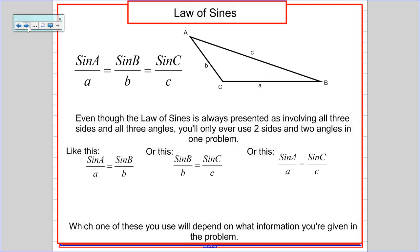So the law of sines is always presented in books and online as involving all three sides and all three angles, but we only ever use two sides and two angles at the same time. We might go back for side C at the end of a problem, but we'll probably just start by looking at A and B or B and C or A and C, not all three of them.